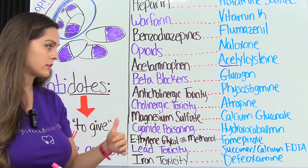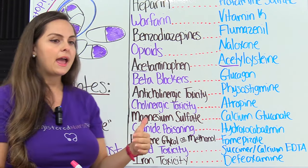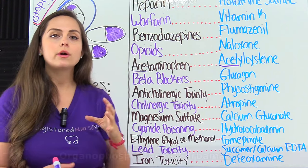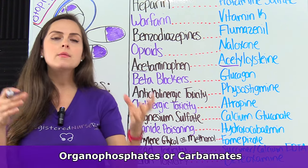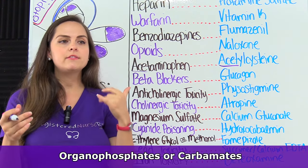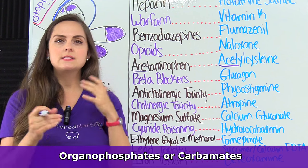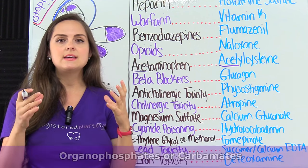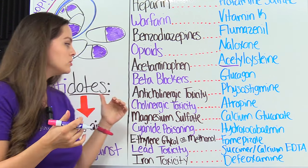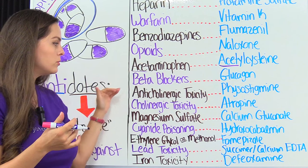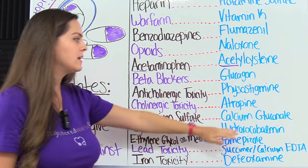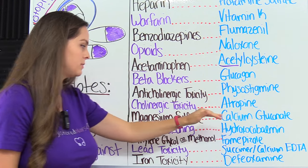On the flip side, we have cholinergic toxicity. This can be caused by substances like organophosphates or carbamates — substances typically found in insecticides and pesticides, which can also be used to poison people. To help reverse that, we can give atropine.